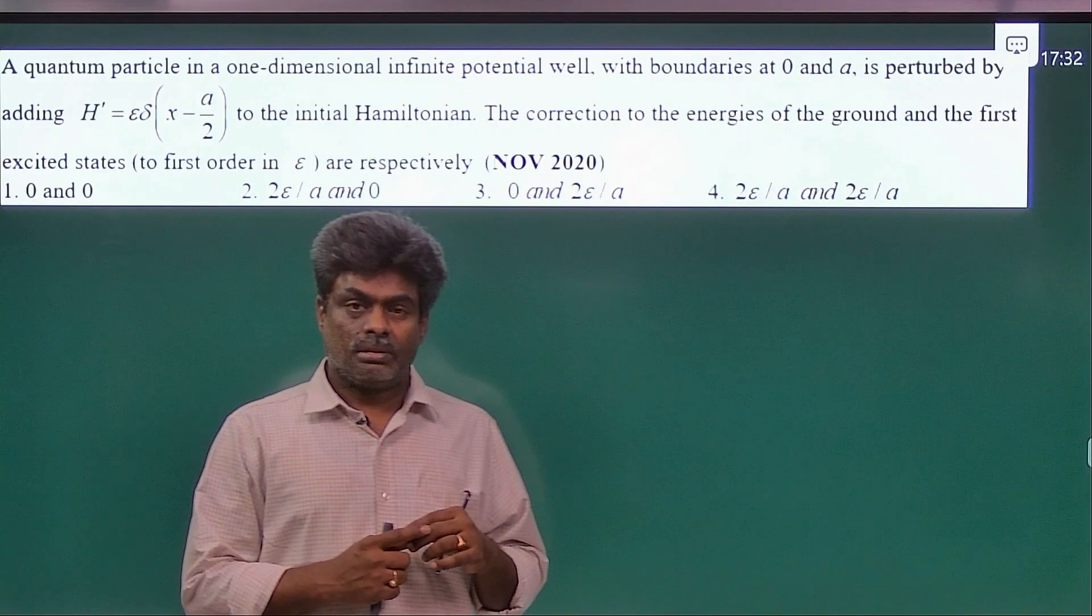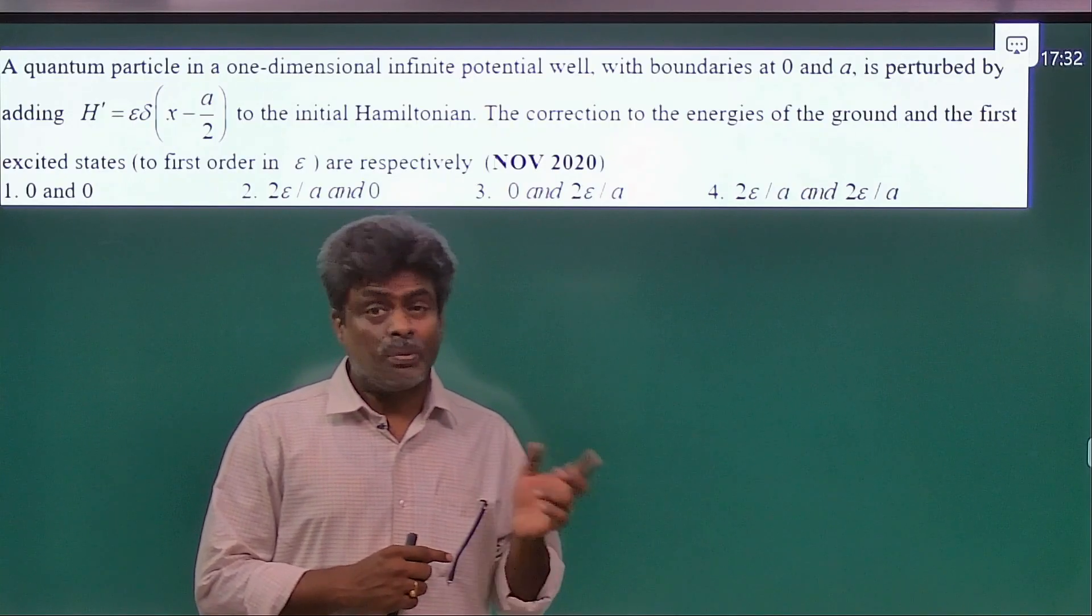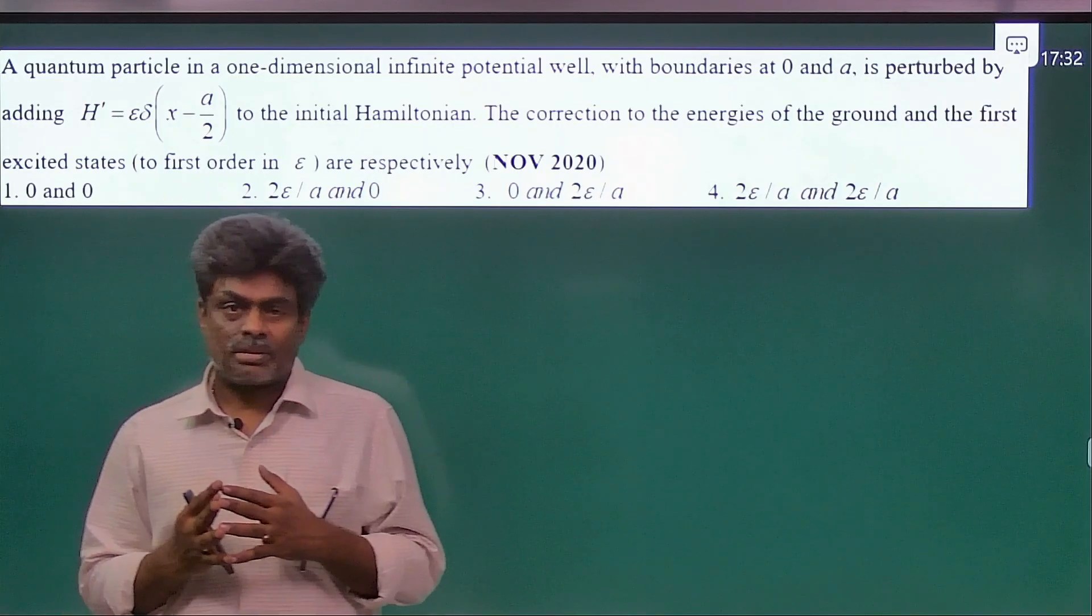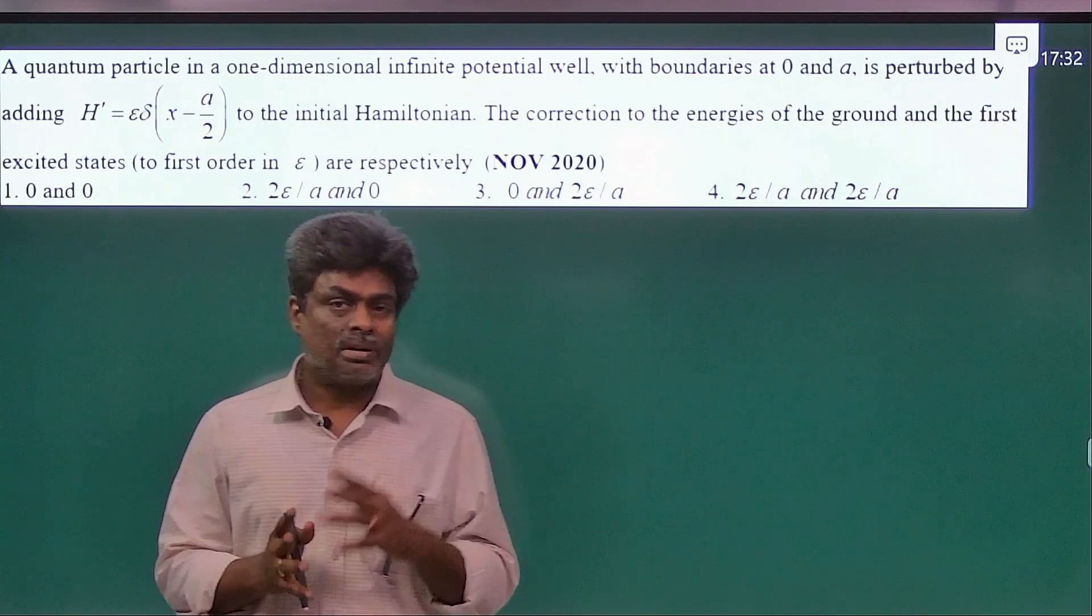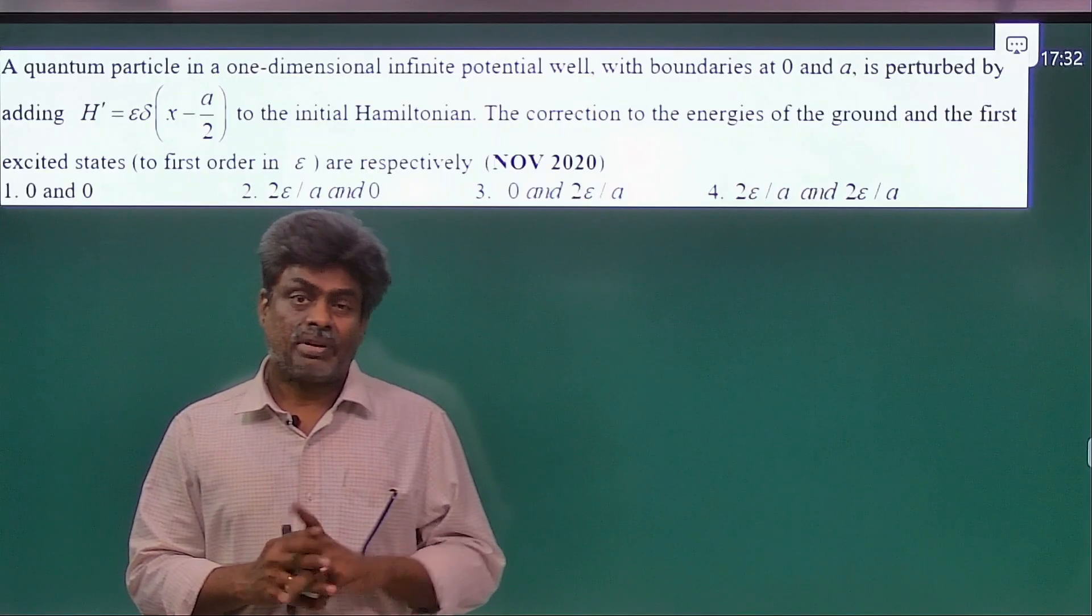They're asking for correction to the energies of ground and first excited states. So my advice, don't find it separately for ground and first excited states. Find for the nth state.